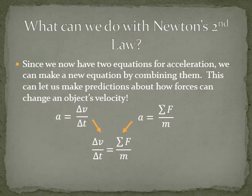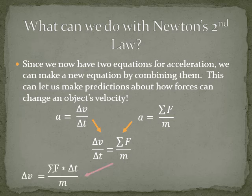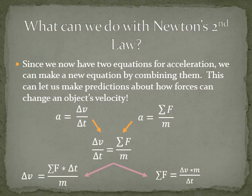So isolate one variable, like for example if you multiply both sides by delta t, you get this equation: delta v equals sigma F times delta t over m. That's the equation that we used when we were talking about our marshmallow launchers to try to help us make predictions about changes we could make to cause the marshmallows to have a bigger change of velocity when they're launched.